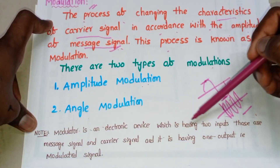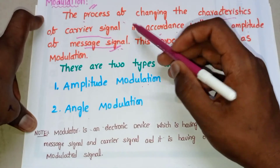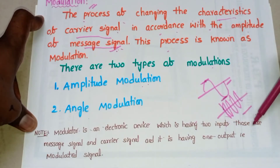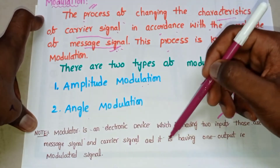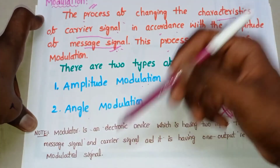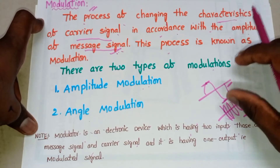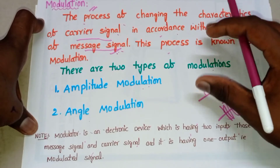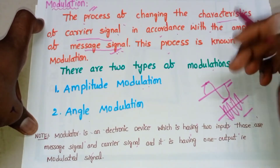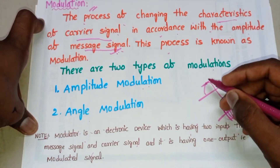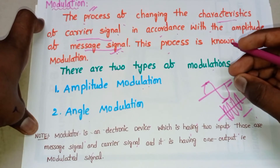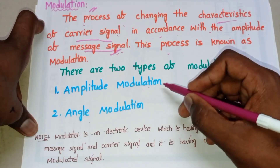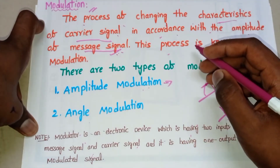A modulator is an electronic device having two inputs: the message signal and the carrier signal, and one output which is the modulated signal. The modulated signal is the output of the modulator, and the message signal and carrier signal are the inputs. In the modulated signal, the low frequency message signal is superimposed onto the high frequency carrier signal. In the next video we will discuss amplitude modulation.